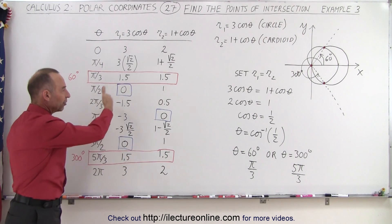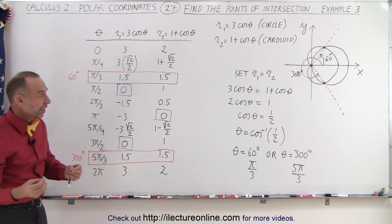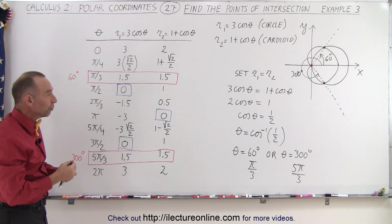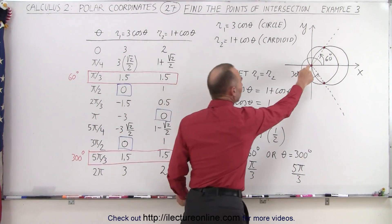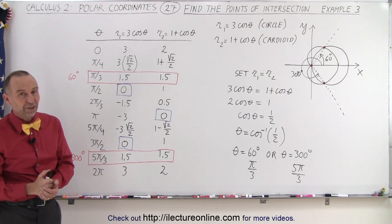But certainly when you set up a table of values, you can realize that both functions will, at some value for theta, reach the value zero, meaning being at the origin, and therefore that gives you the third point of intersection, which eluded us when we used that particular method. That's how it's done.